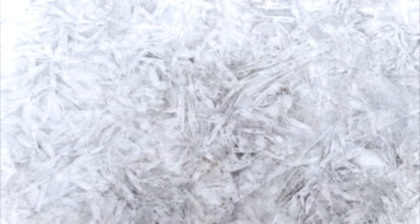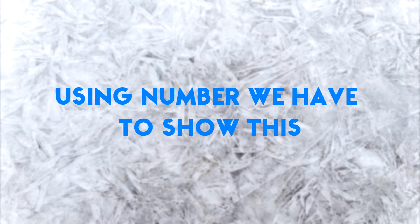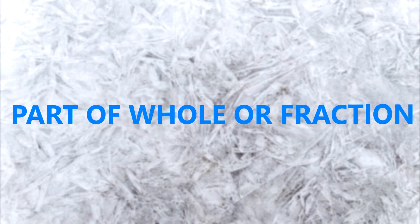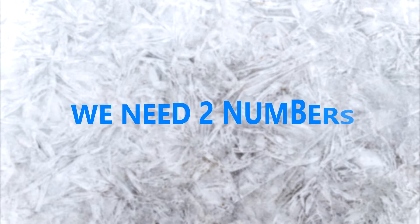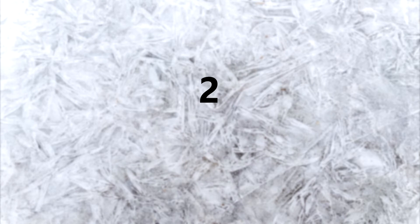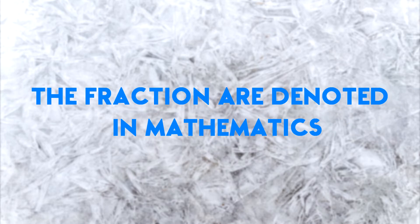Now we will have to represent this in the language of math. Yes, you guessed it correct. That means using numbers we have to show this part of whole or fraction. Now, unlike regular numbers, in fractions we need two numbers to show it. So we have one number above, one number below, and a line separating these two.